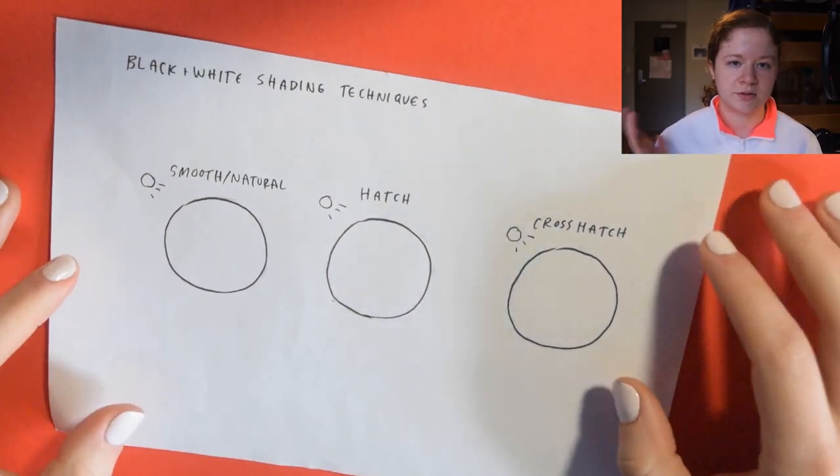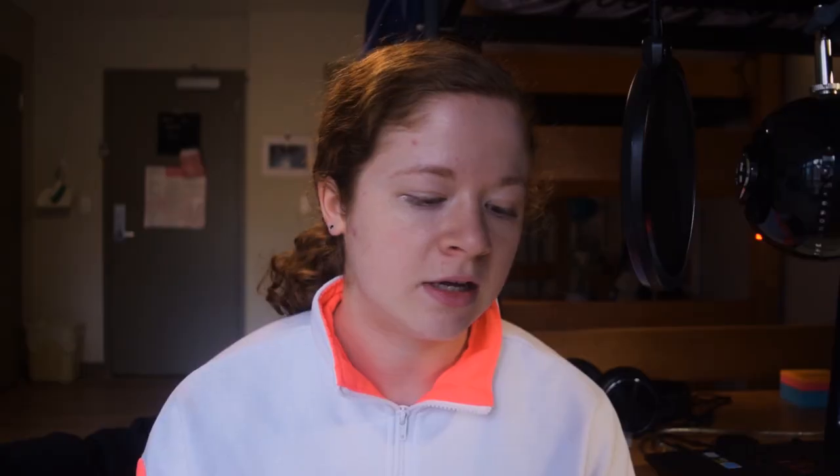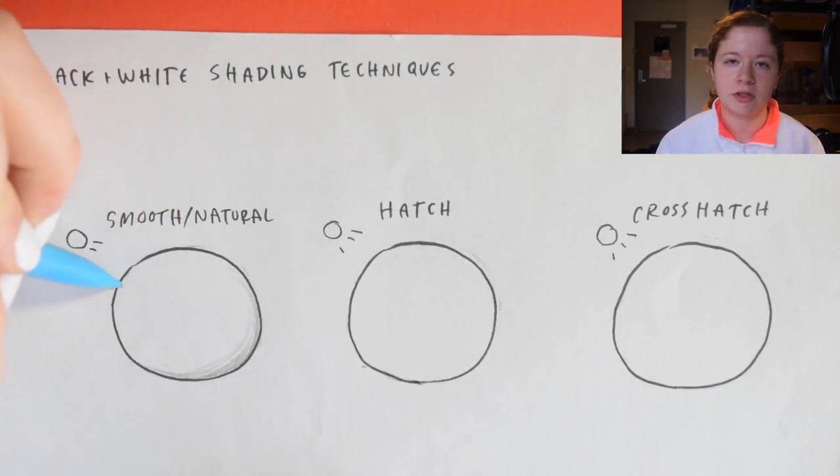So now we're going to go over a few shading techniques starting with black and white. First off, I'm using the simple circle representation just because it's easiest. You've seen this in probably a lot of other videos. There's a bunch of different methods to do shading. I'm just going over the most common three and the most that I use. The first method is the smooth slash natural look.